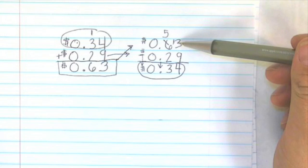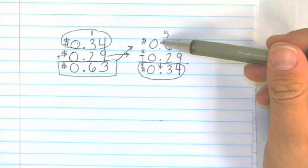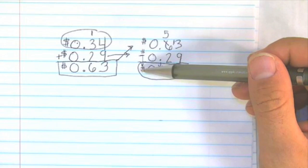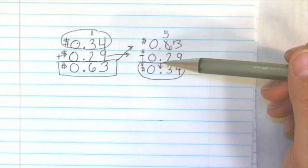So make sure when you're doing this, the digits, the decimal point, and the dollar sign are all lined up correctly on top of each other.